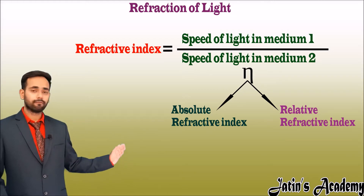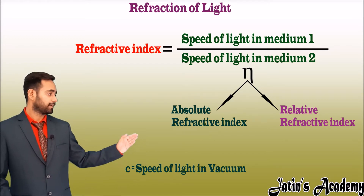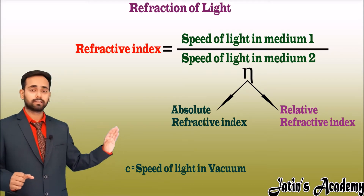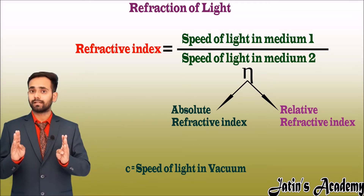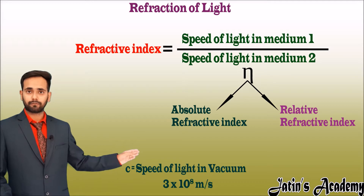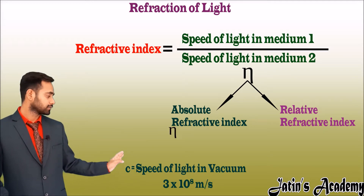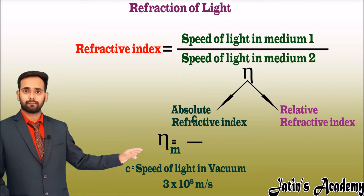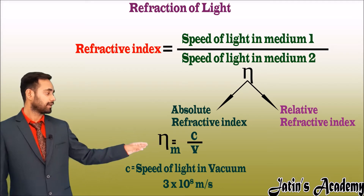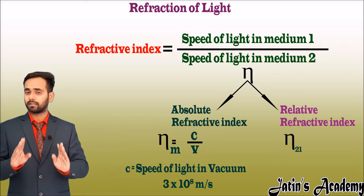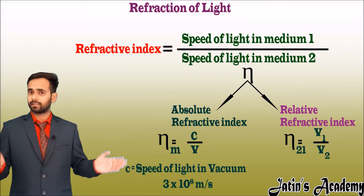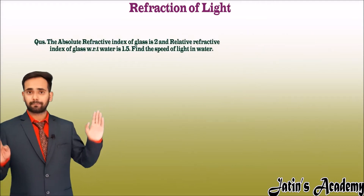We have two types of refractive index: first is absolute refractive index and second is relative refractive index. In absolute refractive index, medium 1 is vacuum. In relative refractive index, medium 1 is other than vacuum. We take absolute refractive index when the medium is vacuum because the speed of light is maximum there, that is 3 × 10⁸ m/s. So the refractive index of a medium with respect to vacuum is c upon v. In relative refractive index, n21 = v1/v2.